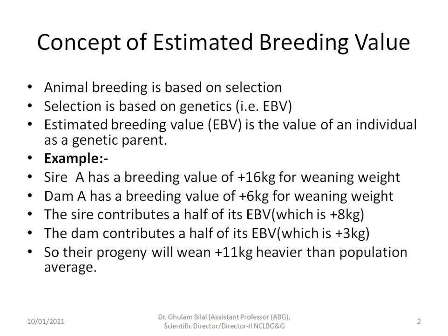As true breeding values are never known, we try to estimate breeding values, which is the value of an animal as a genetic parent. For example, if Sire A has a breeding value of +16 kg for weaning weight and Dam A has a breeding value of +6 kg for weaning weight, the sire contributes half to its progeny, which is +8, and the dam contributes half, which is +3.